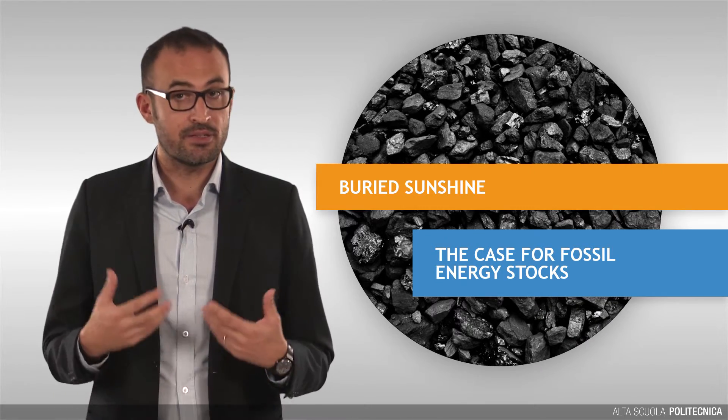The bulk of world phytomass is stored in forests, with tropical rainforests dominating. According to Vaclav Smil, a leading scientist in the field of planetary energetics, the global phytomass store is in the range of 500 to 800 gigatons of carbon. Assuming an average value of 600 gigatons of carbon for total phytomass, this translates to around 20 zettajoules of energy equivalent.